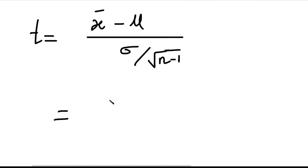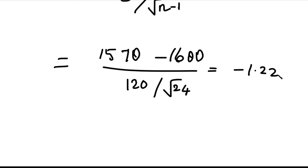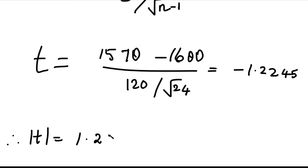Calculating: t = (1570 − 1600) / (120 / √(n−1)) = −30 / (120 / √24). Using a calculator, this simplifies to −1.2245. The modulus of t is |−1.2245| = 1.2245. This is the calculated value of t.